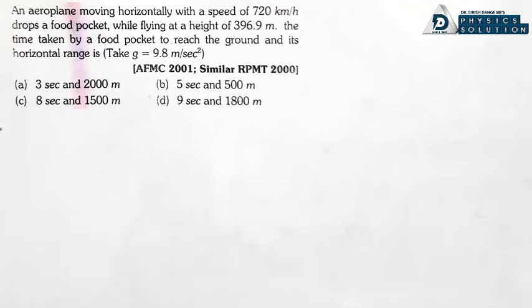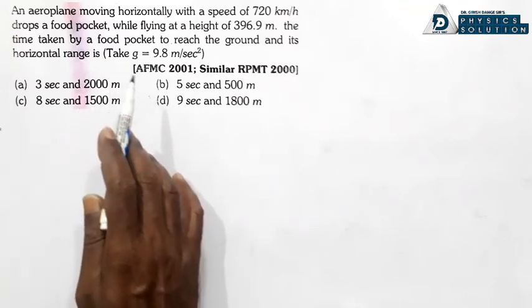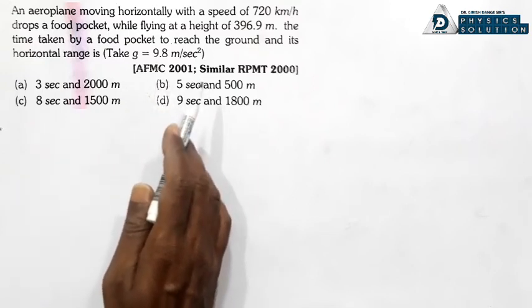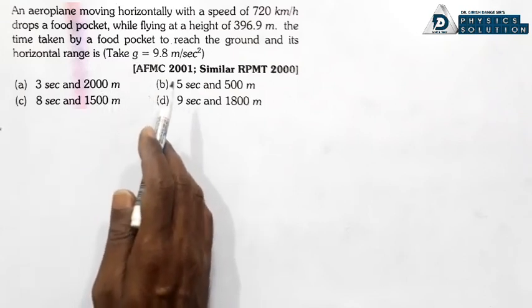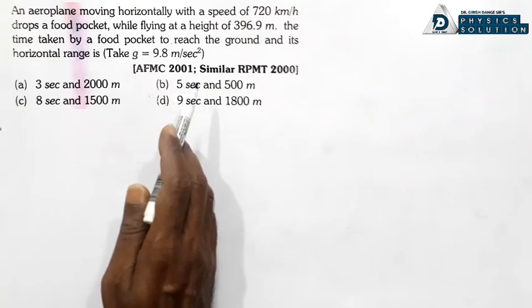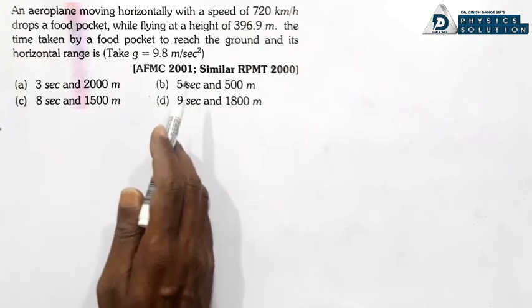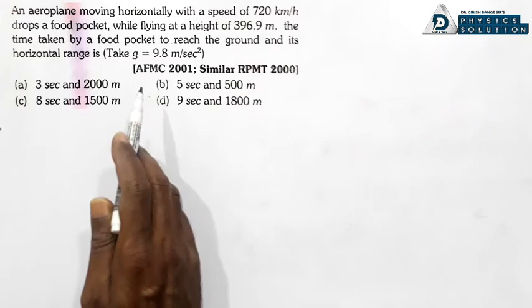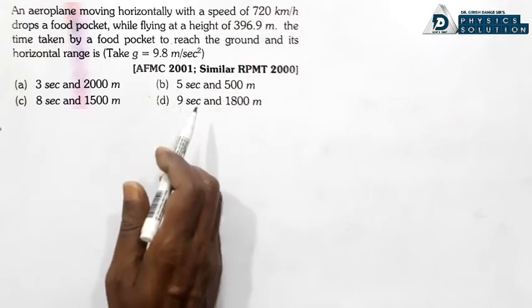Next problem: An aeroplane moving horizontally with speed of 720 km per hour drops a food packet while flying at a height of 396.9 metres. The time taken by the food packet to reach the ground and its horizontal range is to be found. g = 9.8 m/s².